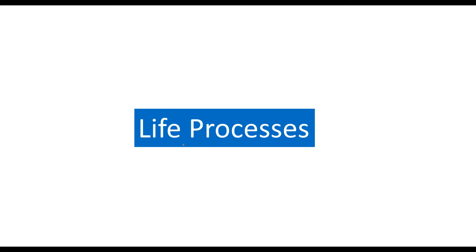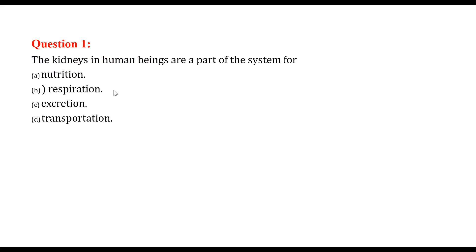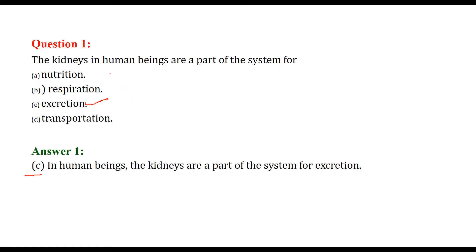Question and answer on life processes. First, the kidney in human beings is part of the system for excretion. Whatever we intake, the energy is taken out and the rest goes out. So excretion — C is the answer.